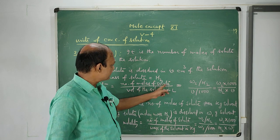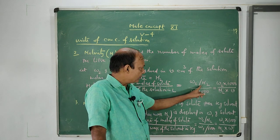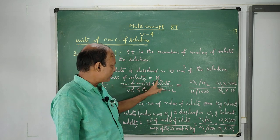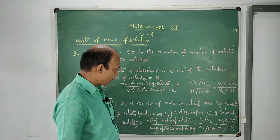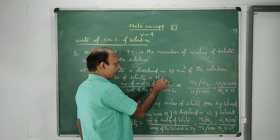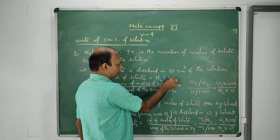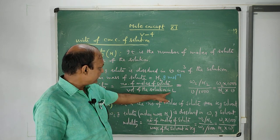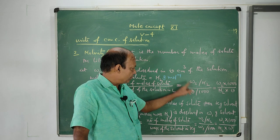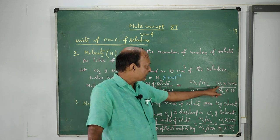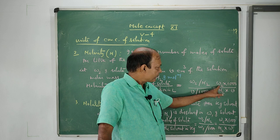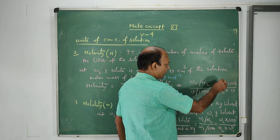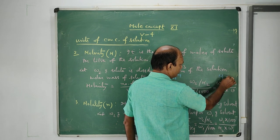Number of moles of the solute equals to given mass of the solute by its molar mass. Given mass is W2 gram, molar mass is M2, so it is W2 by M2. The unit of molar mass is gram per mole. Volume of the solution in liter: V centimeter cube, change it to liter, that is V by 1000. Therefore, the formula we get is W2 into 1000 by M2 into V. This is the formula for finding molarity.